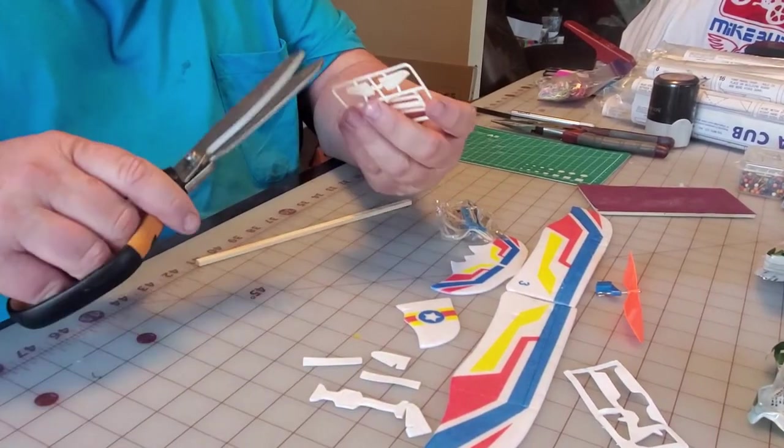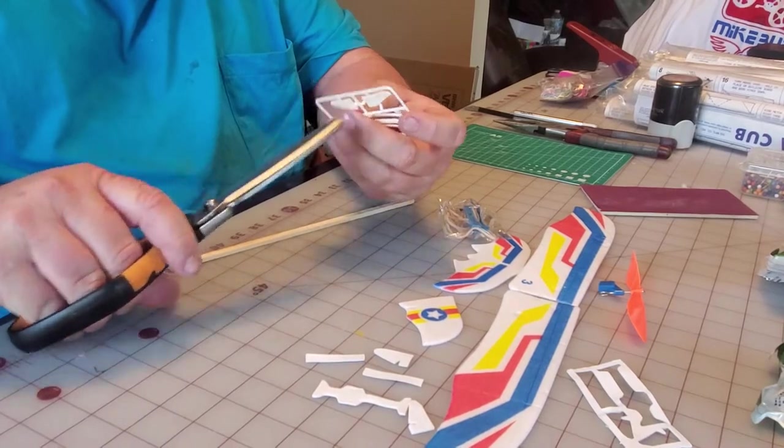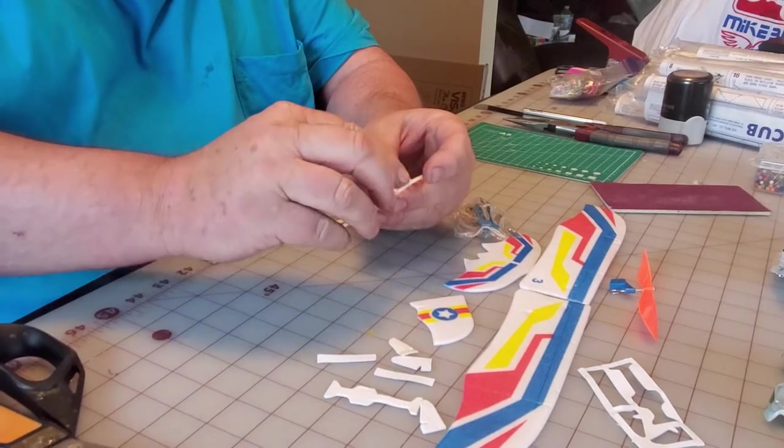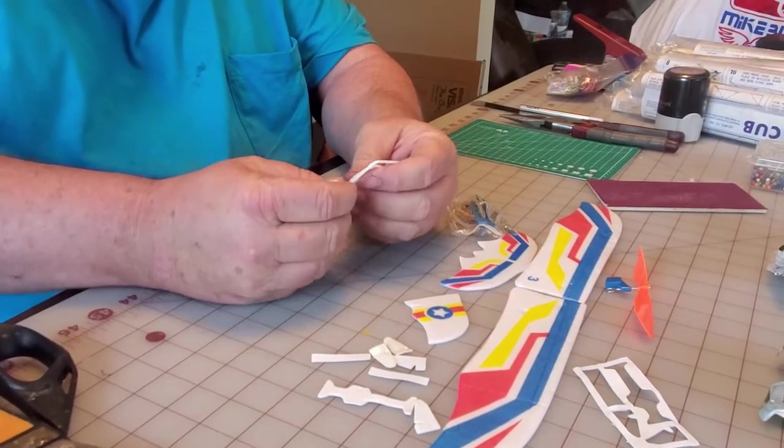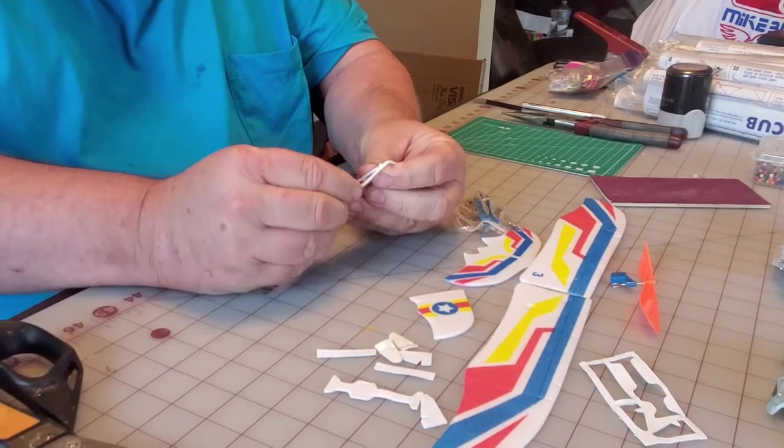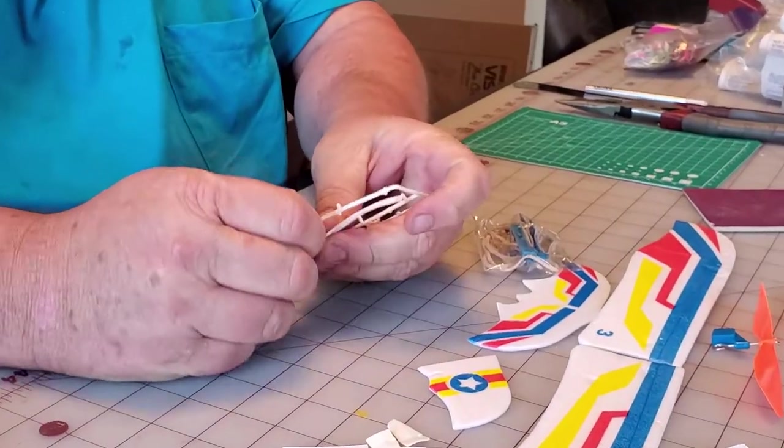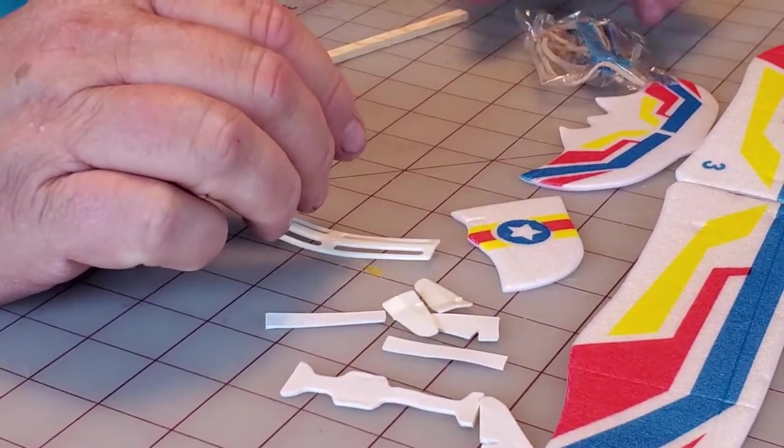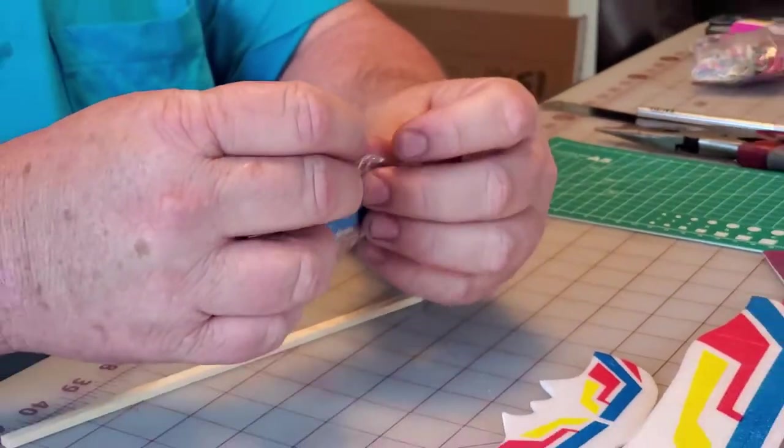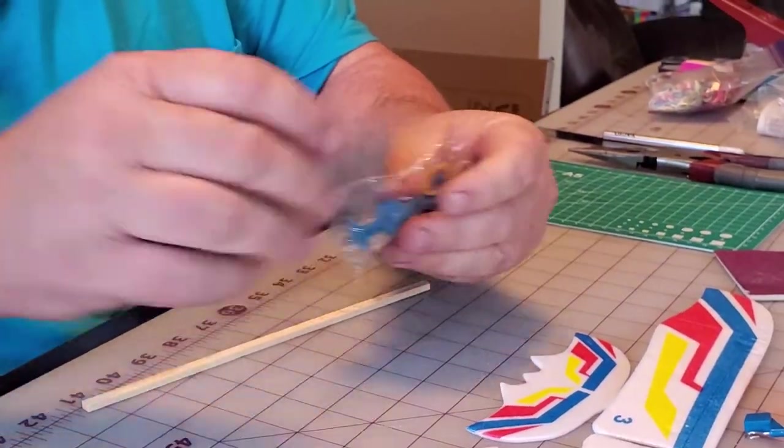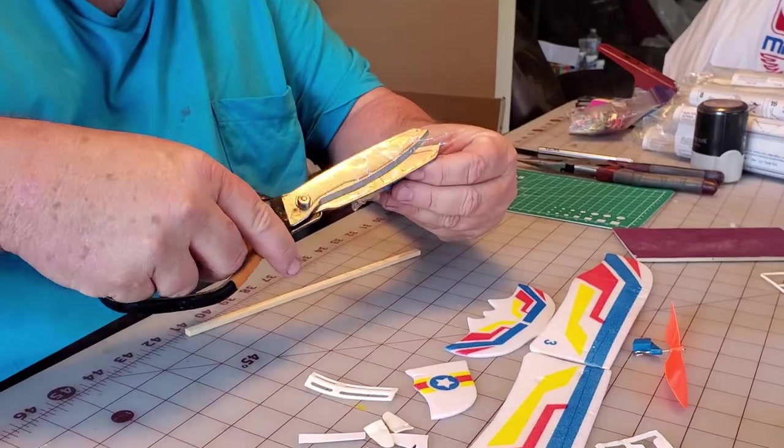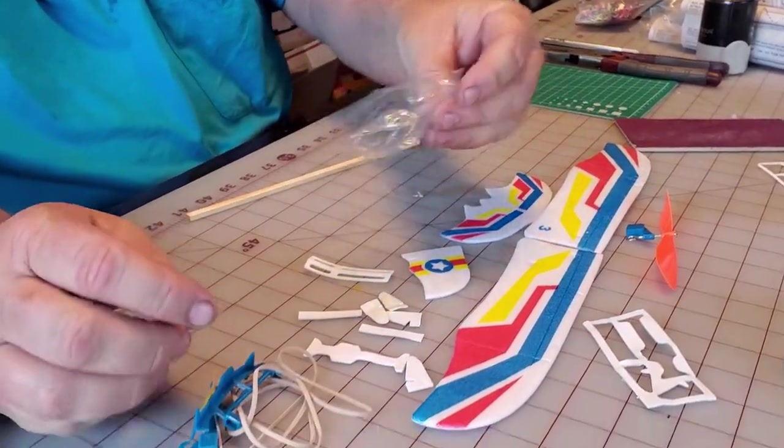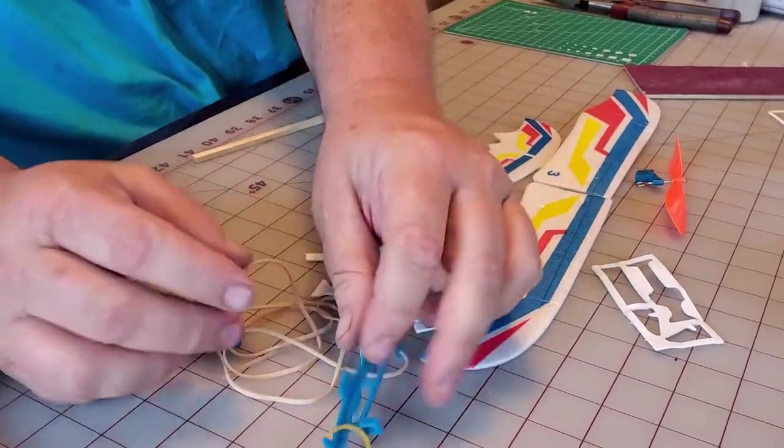So now I'm going to get these plastic parts off here. These are all plastic parts I need to build the plane. This part right here is the center of the wing that holds it together. I'm going to try to cut this without cutting the rubber band.